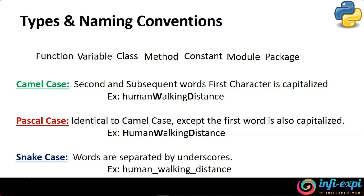The last naming standard is snake case. Snake case is entirely different from camel case and Pascal case. Here too you will have multiple words to represent a type name — for example, a function name or a variable name can carry multiple words. But each and every word has to be separated with an underscore. They will not follow the standards of Pascal case or camel case to highlight the first character in caps. Every word will be separated by underscore, but none of the words' first characters will be in caps.